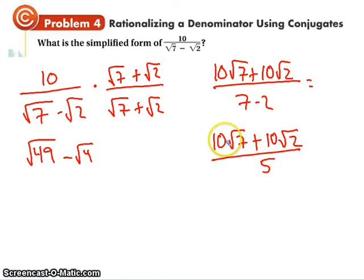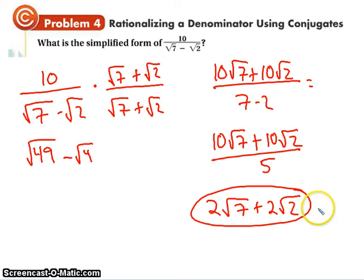So I keep going 10 root 7 plus 10 root 2 over 5. Notice everything has a 5 in common. All of them. The 10, the 10, and the 5. If this were a 6, we could not simplify them. And we don't care what's inside. So what I get is 2 root 7 plus 2 root 2. That is the simplified version.